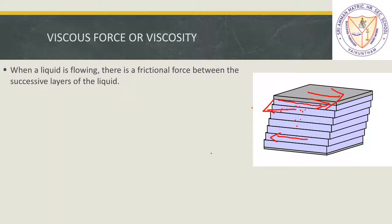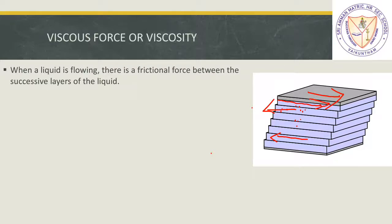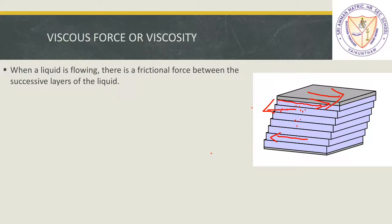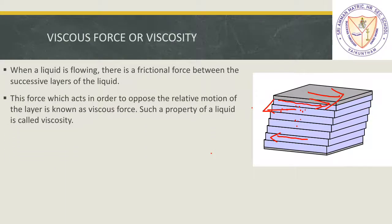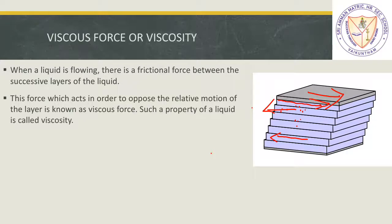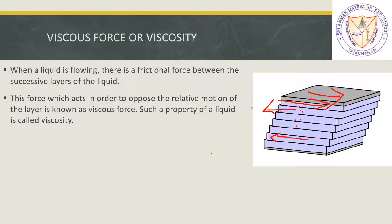When a liquid is flowing, there is a frictional force between the successive layers of the liquid. This force acts to oppose the relative motion of the layers and is known as viscous force. Such a property of a liquid is called viscosity. The force restricting the movement of the different layers of liquid is the viscous force, and the property of a liquid to have such restriction is called viscosity.